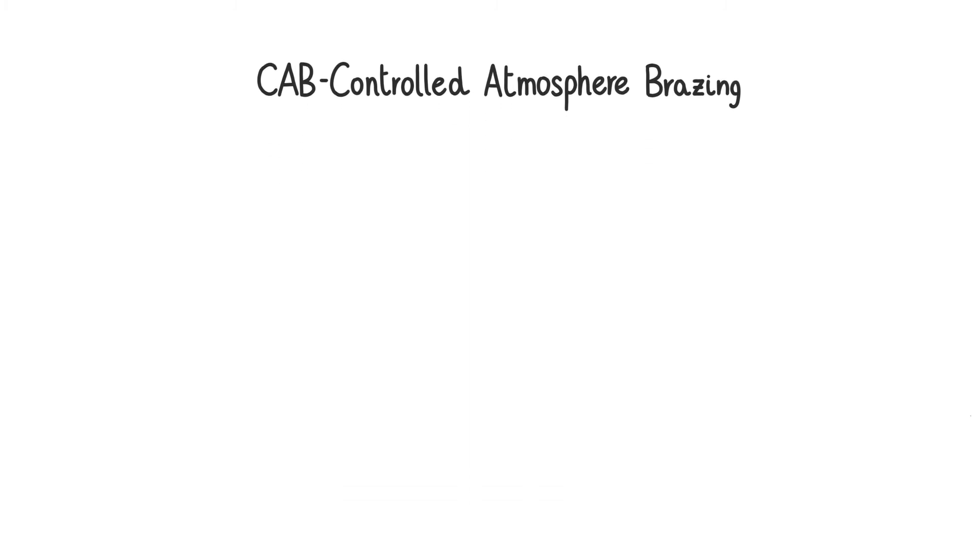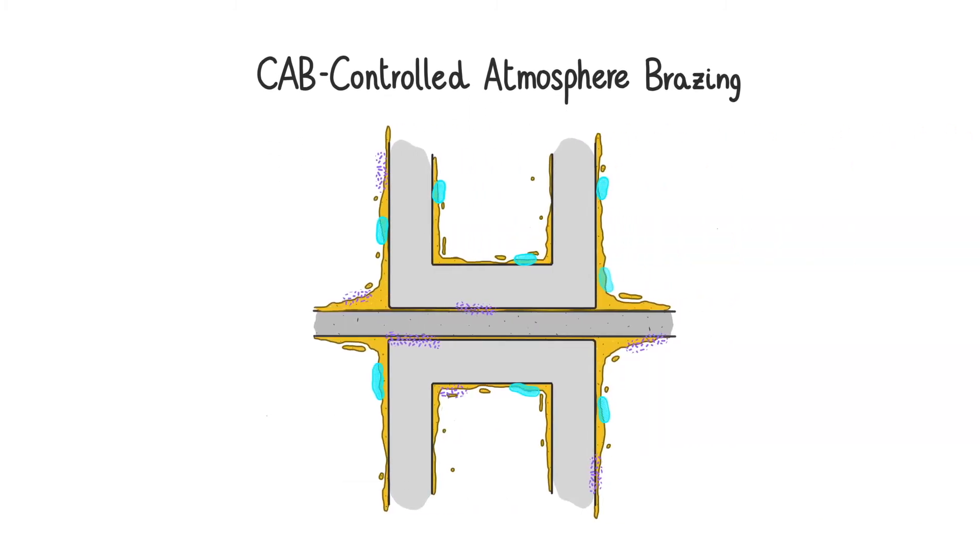There are different types of brazing. In the controlled atmosphere brazing process called CAB, the joint parts are wetted by a water solution with aluminum particulates. During heating, the water evaporates and the aluminum particles melt on the other surfaces.